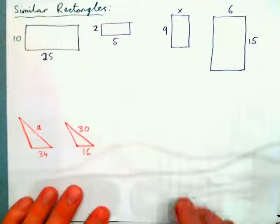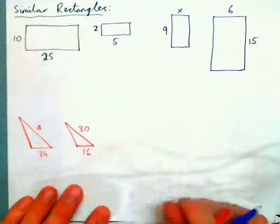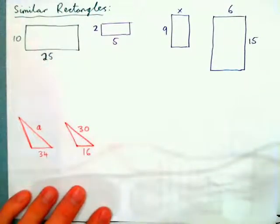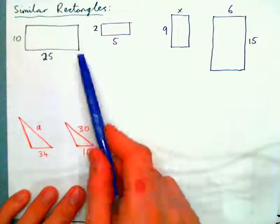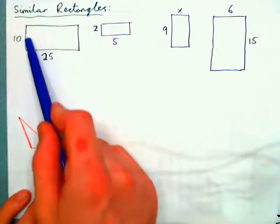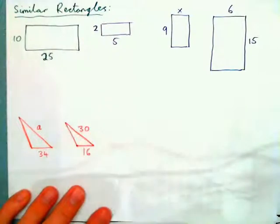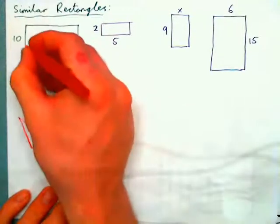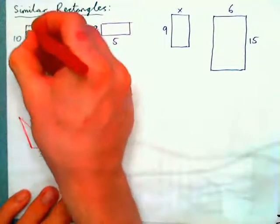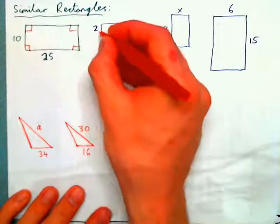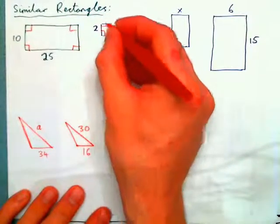Let's have a look at similar rectangles. It's the same as the triangles. With a rectangle, all the corners are 90 degrees — they're all right angles.